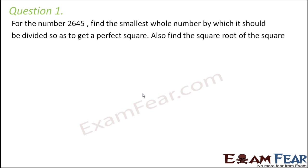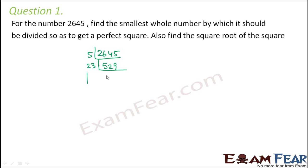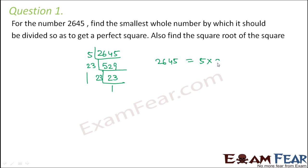First let's try to see whether 2645 is a perfect square or not. For that we will do its prime factorization. The smallest prime number that divides it completely is 5. So 5 into 529 is 2645. Then the next smallest prime number would be 23. So 23 into 23 is 529. Therefore 2645 is equal to 5 into 23 into 23.